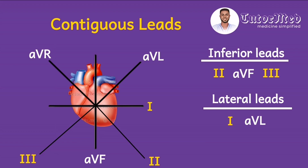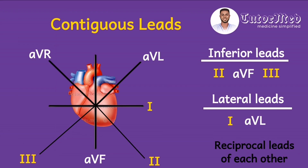Note that the inferior leads — leads 2, 3, and AVF — and the two lateral leads — leads 1 and AVL — are reciprocal leads of each other, meaning they are mirror leads. Because they are mirror leads, whatever one group of leads does, the reciprocal leads show the opposite. For example, if there are ST elevations in leads 2, 3, and AVF, the reciprocal leads — leads 1 and AVL — will show ST depression.